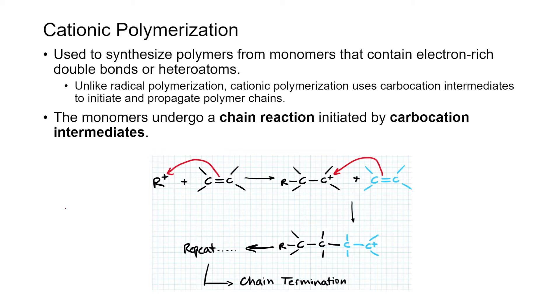So in the last video, we looked at radical polymerization, and we said that involves the use of free radicals to produce your polymer. Here, we're going to be looking at cationic polymerization. And as the name suggests, you're going to be using some sort of carbocation intermediate.